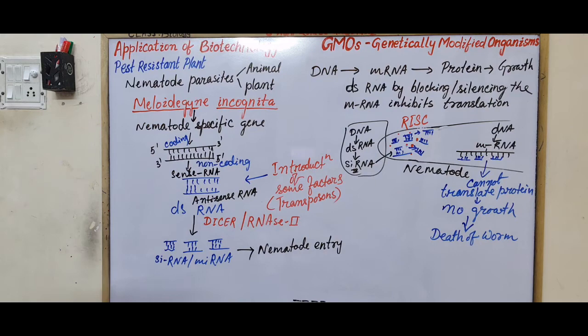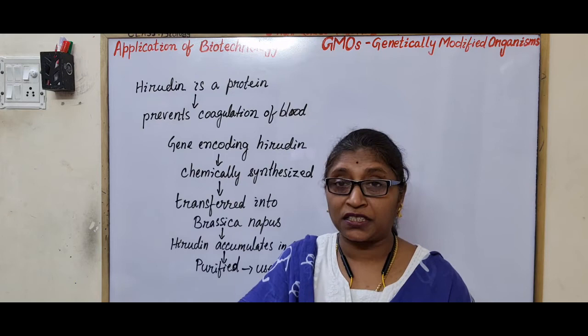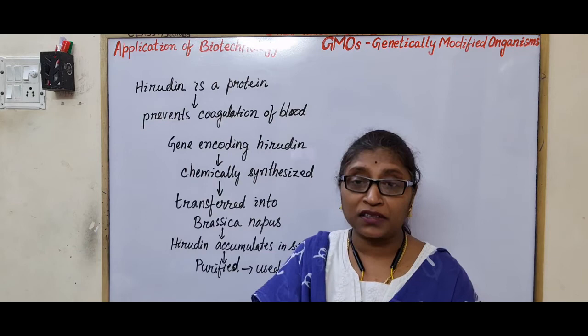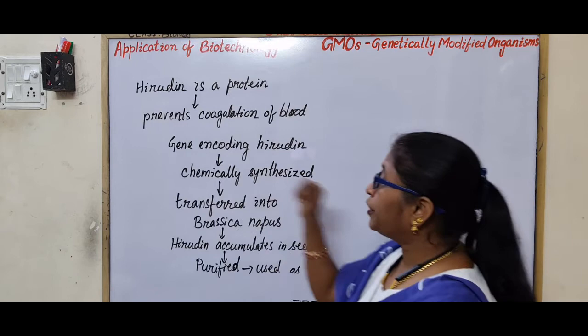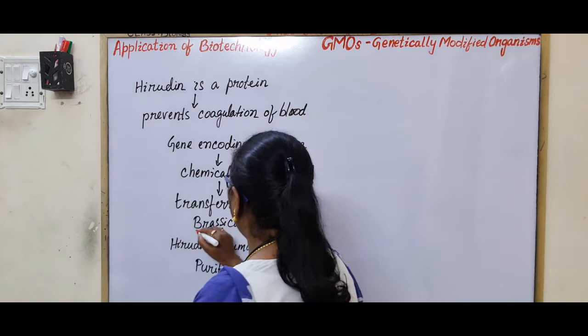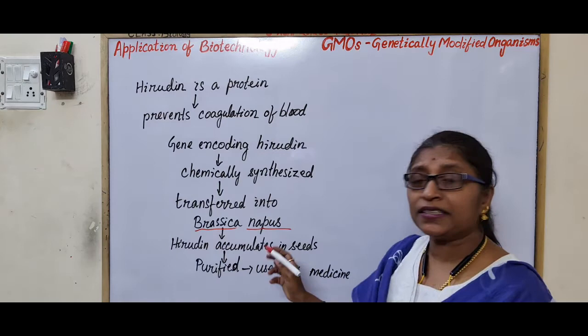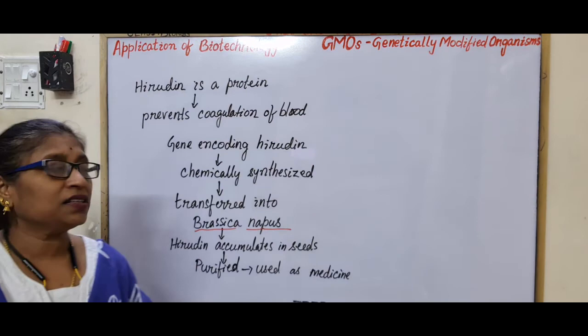Hirudin is a protein that prevents blood clotting (coagulation). It is required when blood is drawn for diagnostic tests, as clotted blood cannot be tested. The gene encoding hirudin was chemically synthesized and transferred into the plant Brassica napus. Hirudin accumulates in the seeds and is extracted, purified, and used as medicine. Next we will discuss genetically modified animals — transgenic animals.